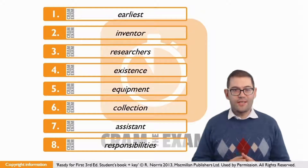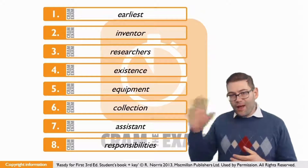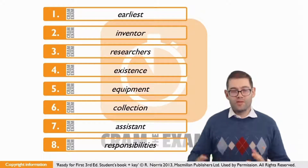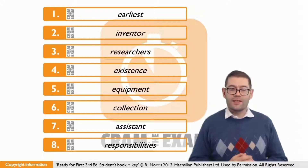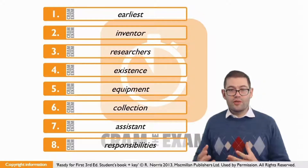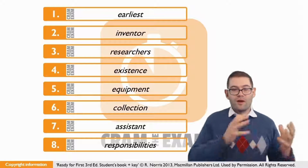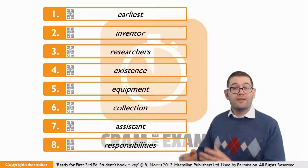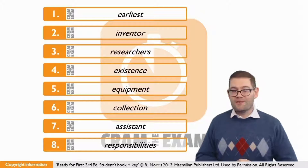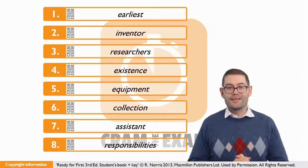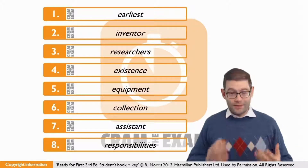For question number one, we've got to look at the language structure here to give us the clues. We've got an article before the gap, and after the gap some way into the distance we've got a noun. Just before that noun we can see a superlative adjective — 'longest lasting' — and before that a conjunction. So we've got: article, blank, conjunction, superlative plus noun. We need a superlative as well, and the answer is 'earliest.'